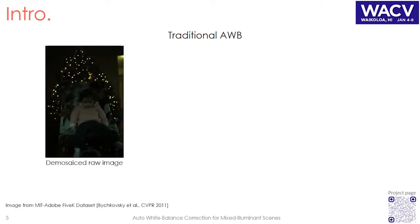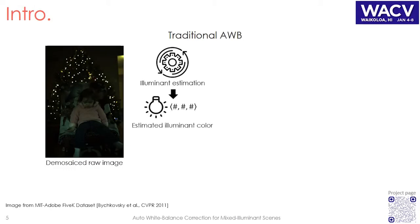White balance is applied to the raw sensor image by first estimating a single illuminant RGB vector that represents the global color tint in the raw image. Afterwards, a single diagonal correction matrix is applied to all colors in the raw image.